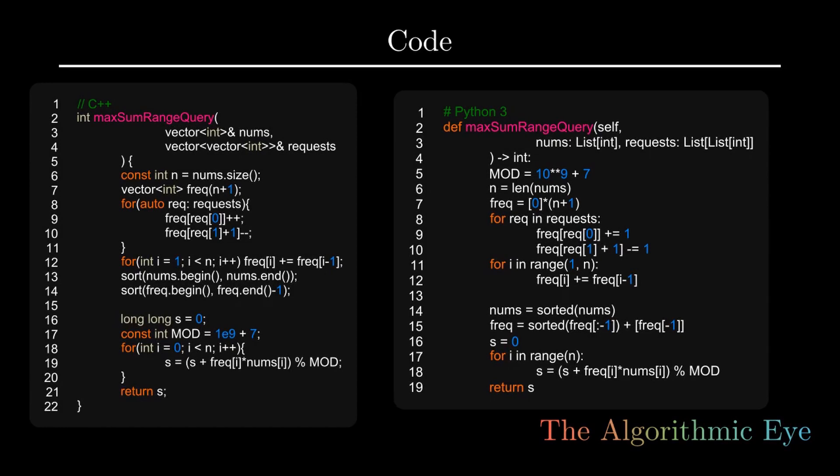Let's look at the code now. I'll explain the C++ code and the Python code is very similar. In lines 8 through 12, we just build our frequency array. Here I took the frequency array of length 1 greater than the size of nums, so that we don't have to do the checking of that condition whether the right index plus 1 is within the array.